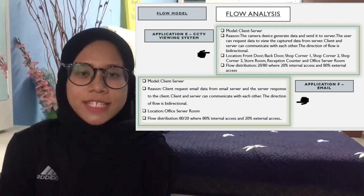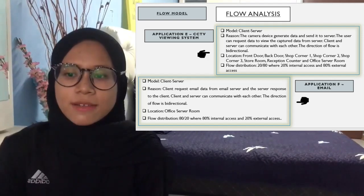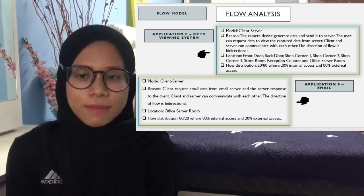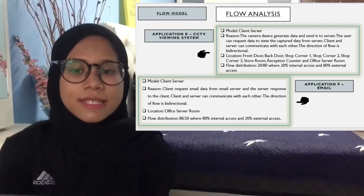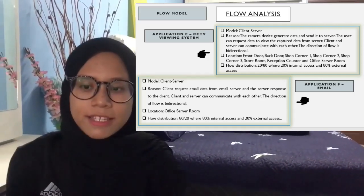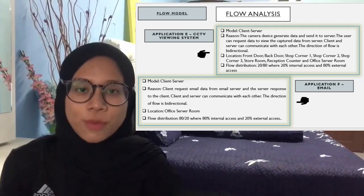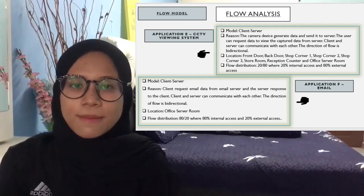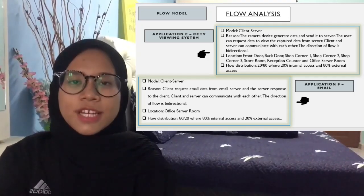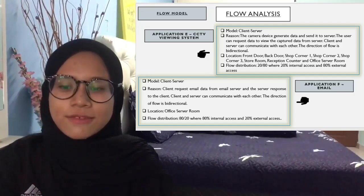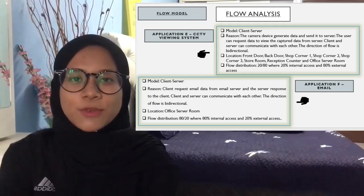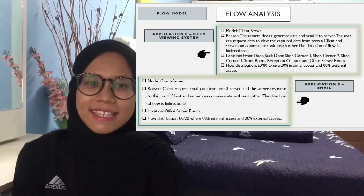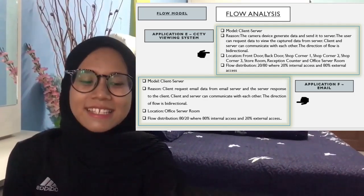Application F is email. Its model is client-server because the client requests email data from the email server and the server responds to the client. Client and server communicate bi-directionally. The location is the office server room, and the flow distribution is 80/20 — 80% internal and 20% external access.